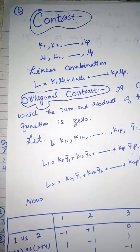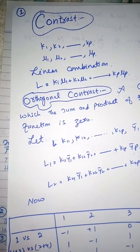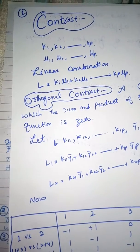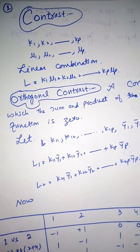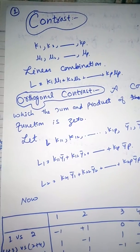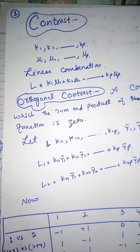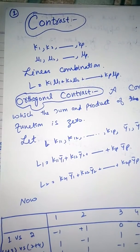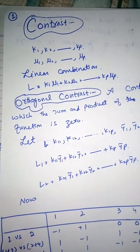So it's a linear combination. We have something like this: k1 mu1 plus k2 mu2 up to kp mu p. This is our linear combination that forms a contrast.